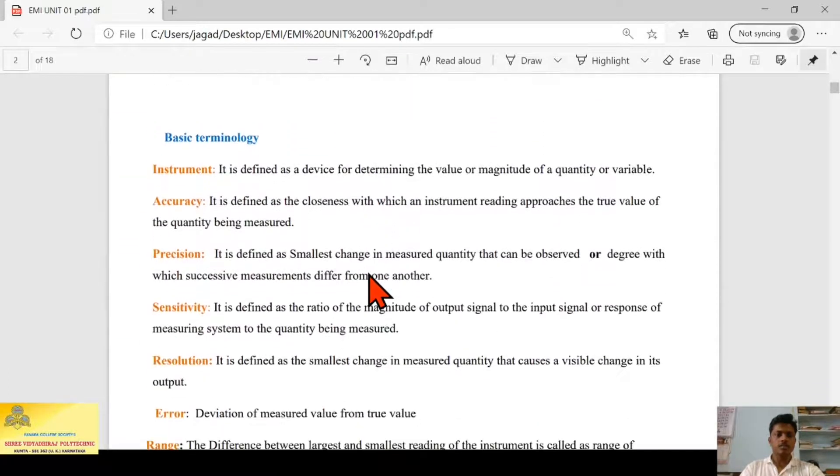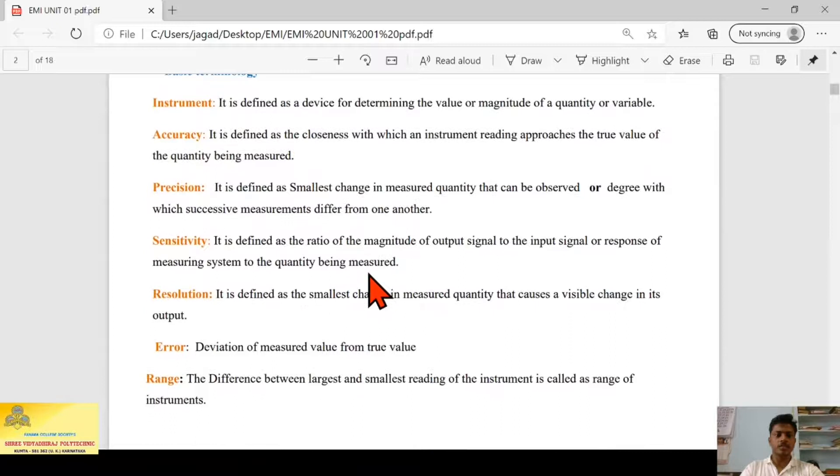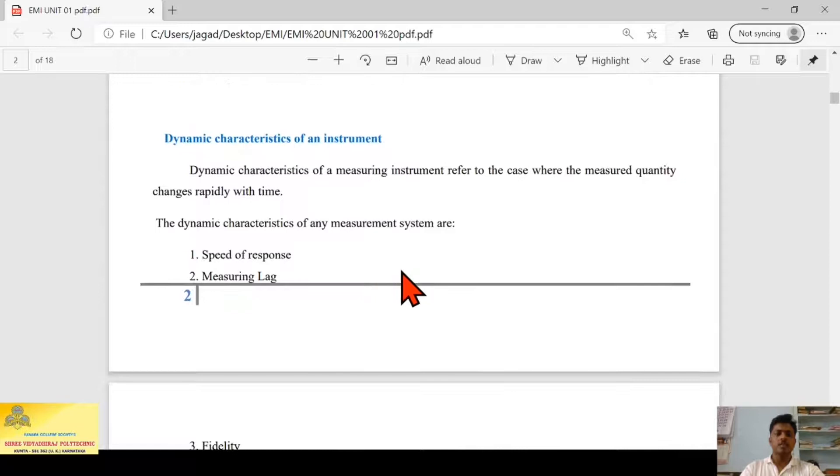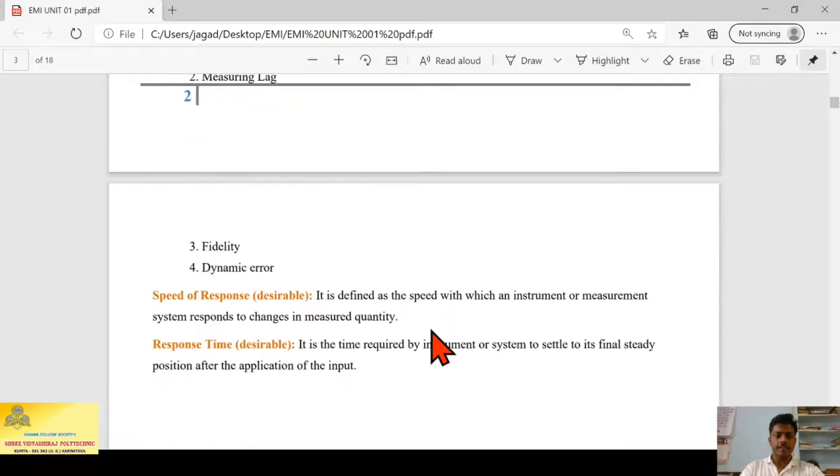Next we have seen some basic terminologies like accuracy, precision, sensitivity, resolution, error, and range. We also seen dynamic characteristics of an instrument: speed of response, measuring lag, fidelity, and dynamic error.